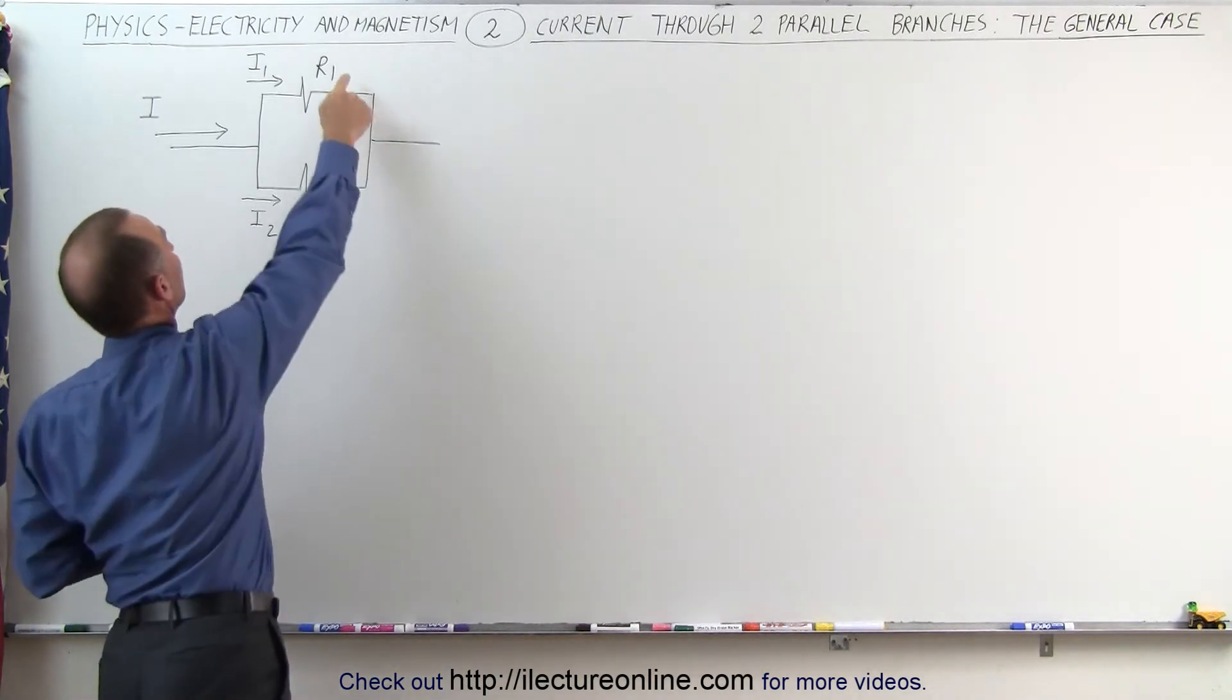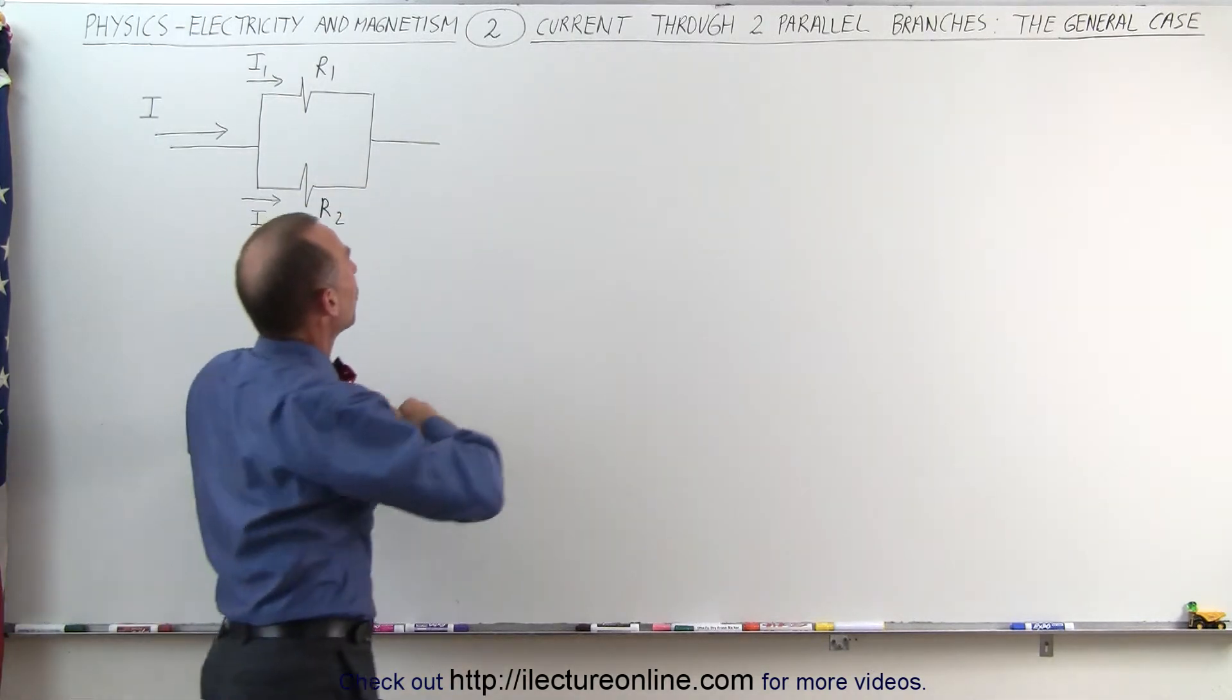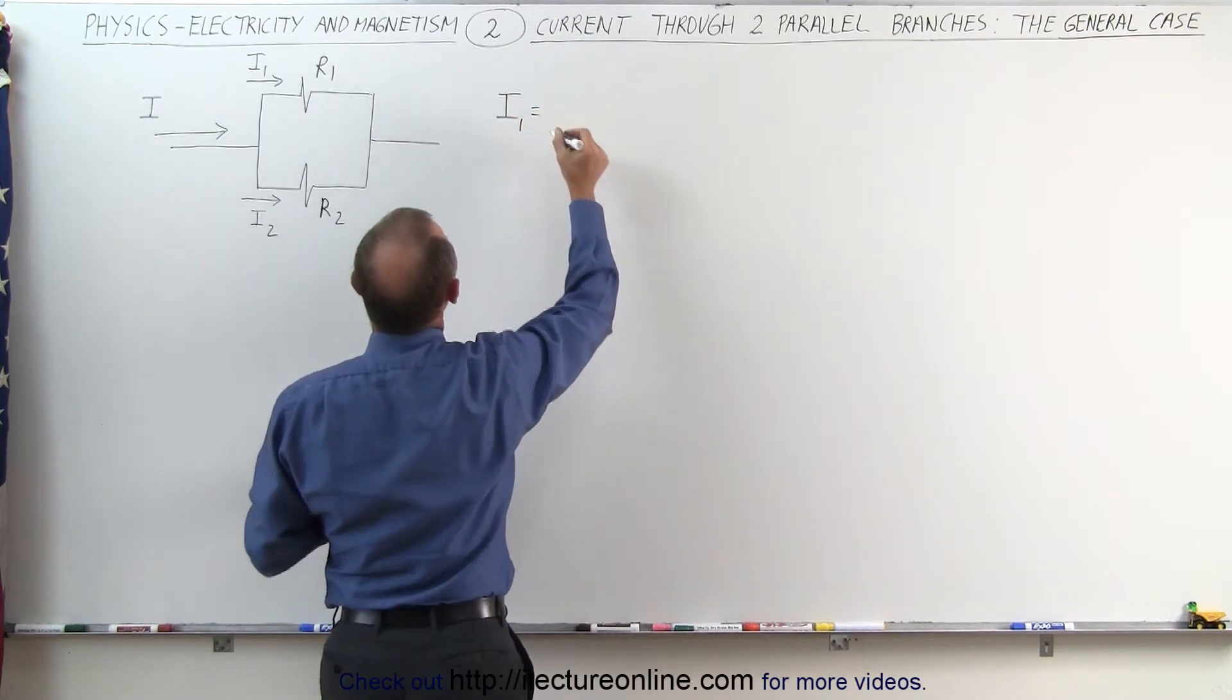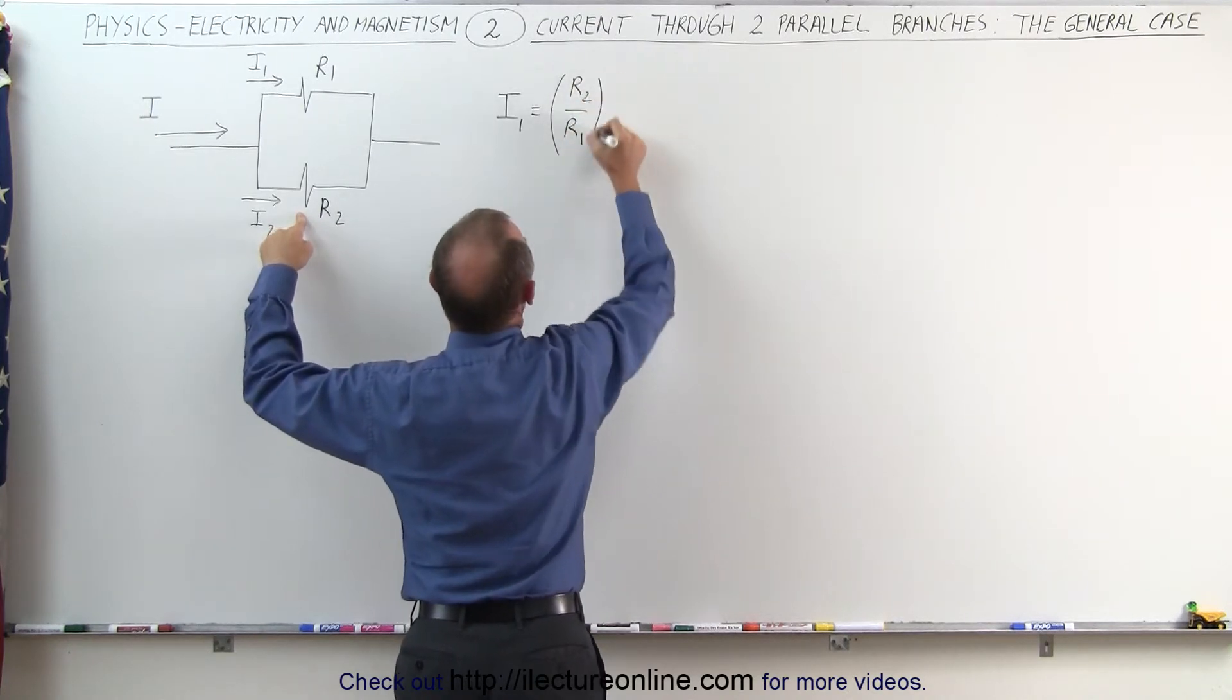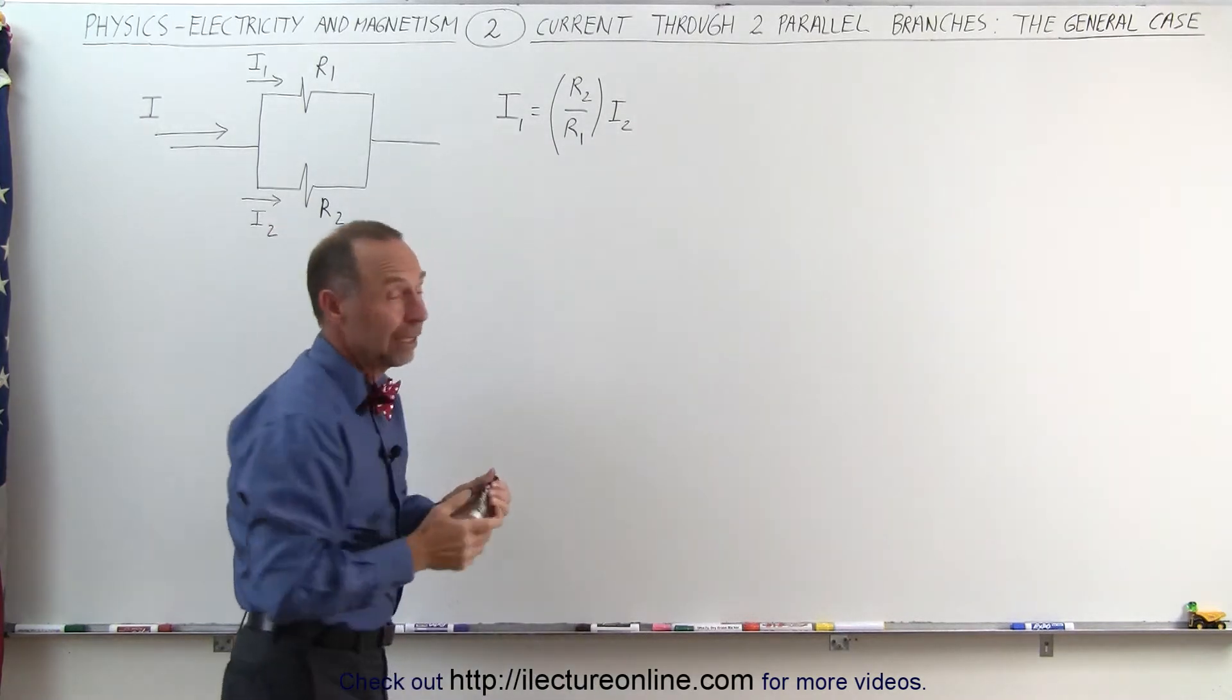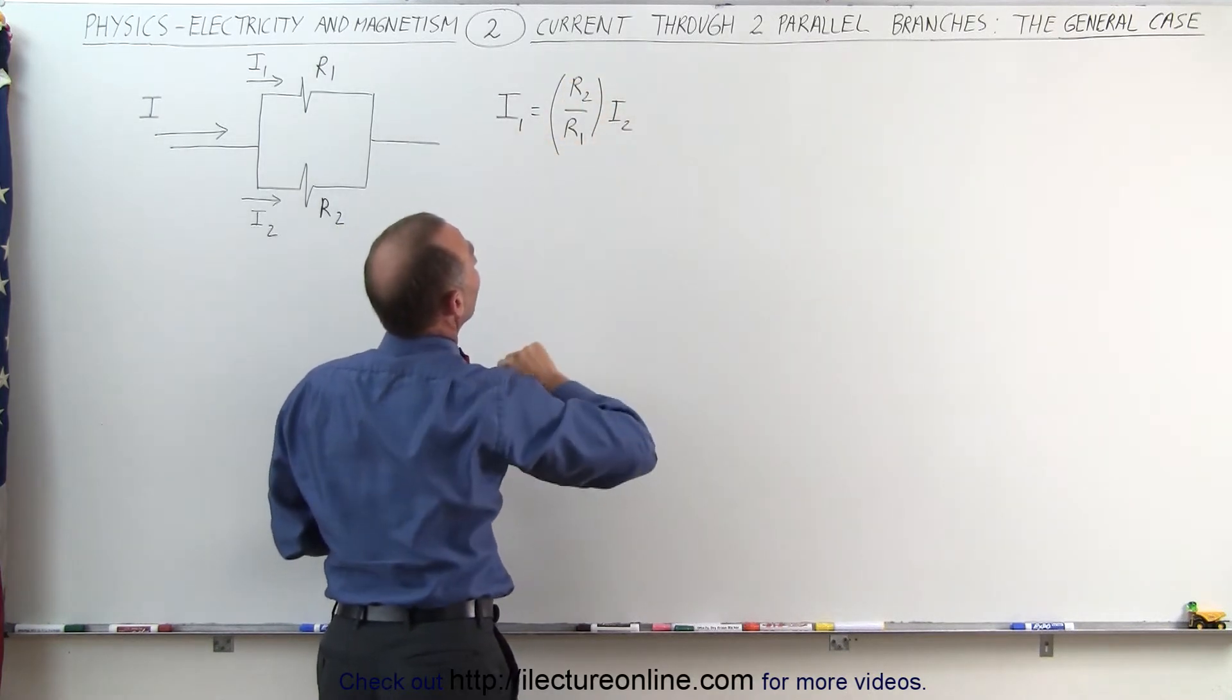And if R1 is smaller than R2, then more current will flow here and less current will flow there. If we want to write that into an equation, we can then say that I1 will be equal to the ratio of R2 over R1 times the current in the other branch, I2. Again, if the resistances are the same, then of course that will be 1 and the current through both branches will be the same.